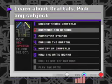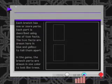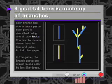To learn more about how the grammar changes the string, let's look at number 2. A Graftal tree is made up of branches. Each branch has one or more parts. Those parts are described using one or two facts, shown here in blue and yellow.